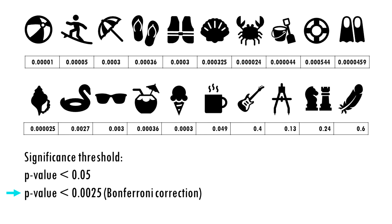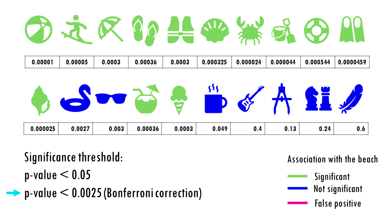If we use the first method to correct for multiple testing, the Bonferroni correction, we would have to use a p-value of 0.0025. This means that the cup of coffee would no longer be considered associated with the beach. But check this out — we are losing some objects that would be interesting for us. For example, the floaty and the sunglasses are now false negatives. As you can see, this is not an ideal solution.